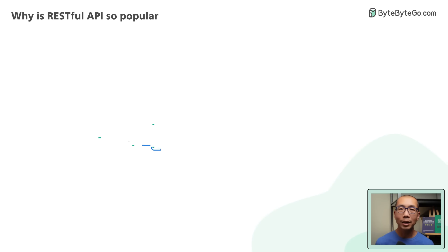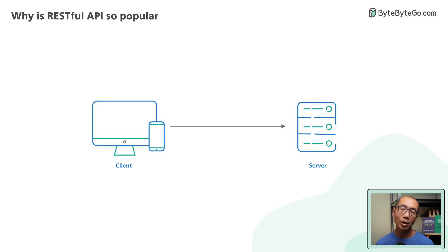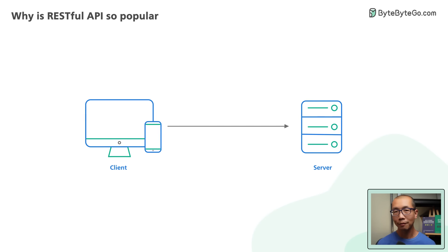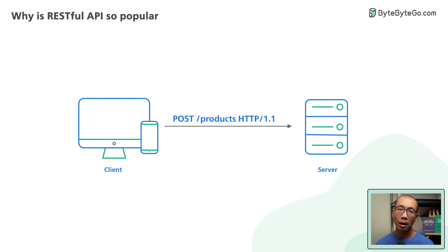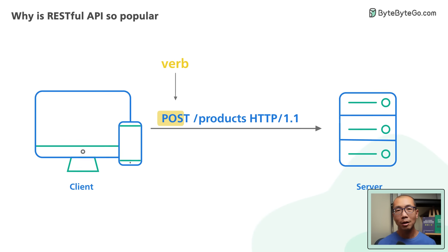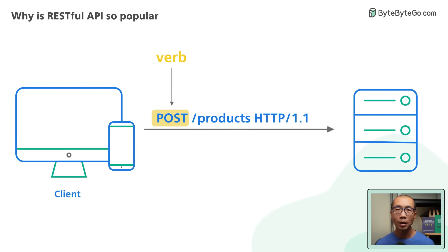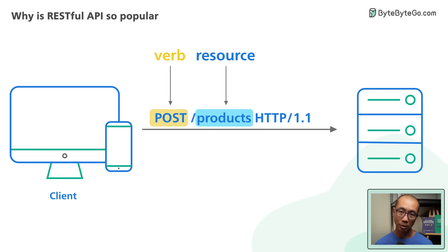A client interacts with a resource by making a request to the endpoint for the resource over HTTP. The request has a very specific format. One line contains the URI for the resource we'd like to access, preceded by an HTTP verb which tells the server what we want to do with the resource.